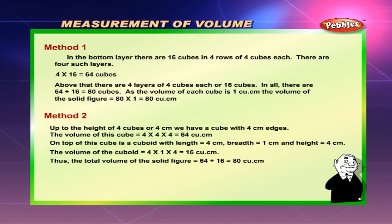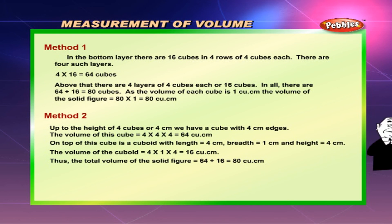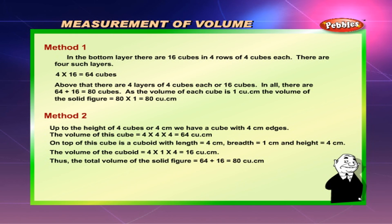Method 2: Up to the height of four cubes or four centimetres, we have a cube with four centimetre edges. The volume of this cube equals 4 into 4 into 4, which equals 64 cubic centimetres. On top of this cube is a cuboid with length 4 centimetres, breadth 1 centimetre, and height 4 centimetres. The volume of the cuboid equals 4 into 1 into 4, which equals 16 cubic centimetres. Thus, the total volume of the solid figure equals 64 plus 16, which equals 80 cubic centimetres.